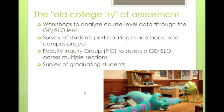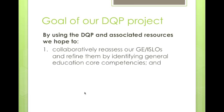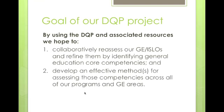None of these — or rather, all of these worked at some level, but were very difficult to scale. So the goal of our DQP project was to look at the Degree Qualifications Profile as well as other associated resources and, first, really reassess our GEISLOs and refine them by identifying some core competencies to replace those in our flower diagram. Second, to develop an effective method for assessing those competencies — one that could be effective across all programs and GE areas, and also be scalable and consistent from year to year.